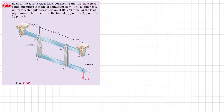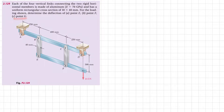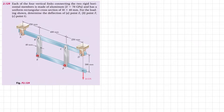Welcome back. Problem 2.129 from Mechanics of Materials by Beer & Johnston, 7th edition. Each of the four vertical links connected to the two rigid horizontal members is made of aluminum with E = 70 GPa and a uniform rectangular cross section of 10 by 40 millimeters. For the loading shown, determine the deflection at points E, F, and G. We have four links connected to two rigid horizontal members, and at point G we have a loading of 24 kilonewtons.